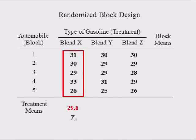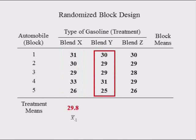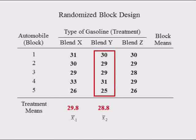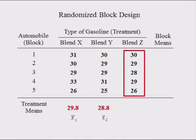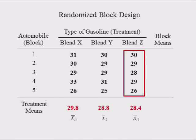Adding up the five numbers in the Blend X column and dividing by five equals X-bar dot 1, treatment one's sample mean. The five cars had an average fuel economy of 29.8 MPG using Blend X. Adding up the five numbers in the Blend Y column and dividing by five equals X-bar dot 2, treatment two's sample mean — 28.8 MPG. Adding up the five numbers in the Blend Z column and dividing by five equals X-bar dot 3, treatment three's sample mean — 28.4 MPG.